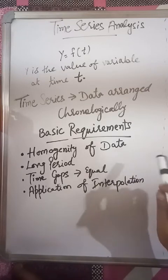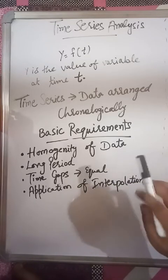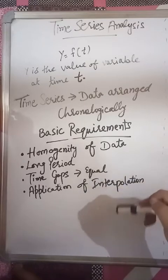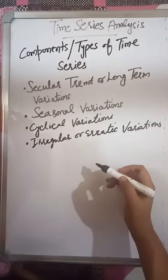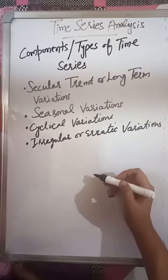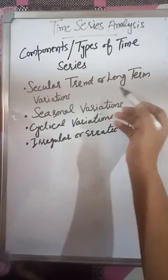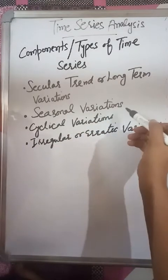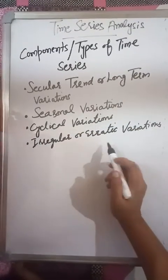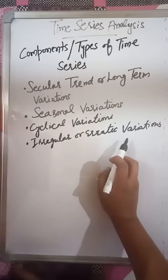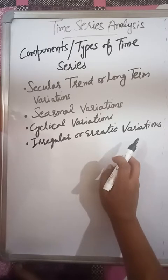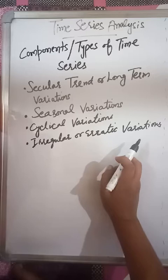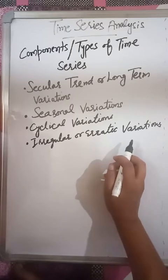Now we will discuss the components of time series, or what types of time series exist. We can see that four types of trends can be seen in time series: namely secular trend or long term variations, seasonal variations, cyclical variations, and irregular or erratic variations. Secular trend means over a long period of time.